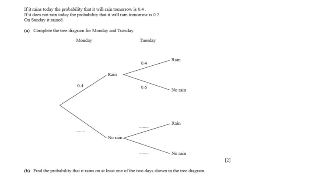So on Sunday it rained, and therefore if it rains, the chance it will rain tomorrow is 0.4. So the chance of raining is 0.4, and what is the chance for it not to rain?